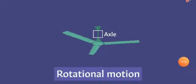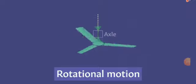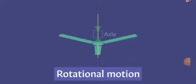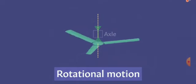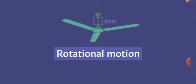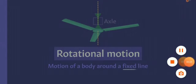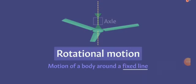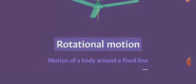Third is rotational motion. When the object is moving along an axis, it is known as rotational motion. Here the fan is moving along an axle or axis, that means around a fixed line, and this is known as rotational motion.